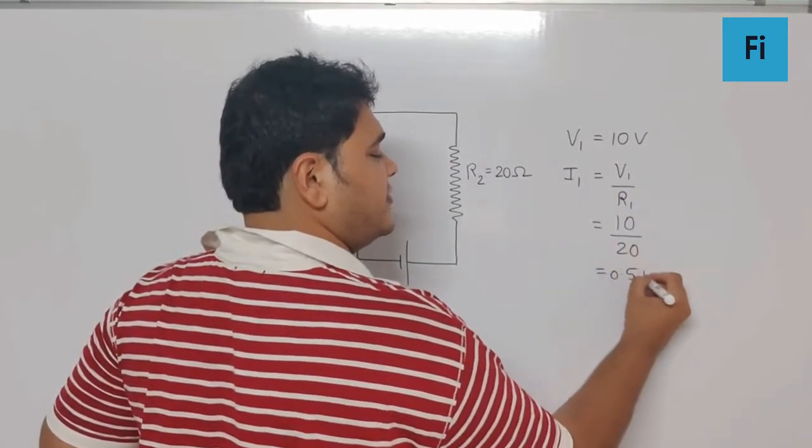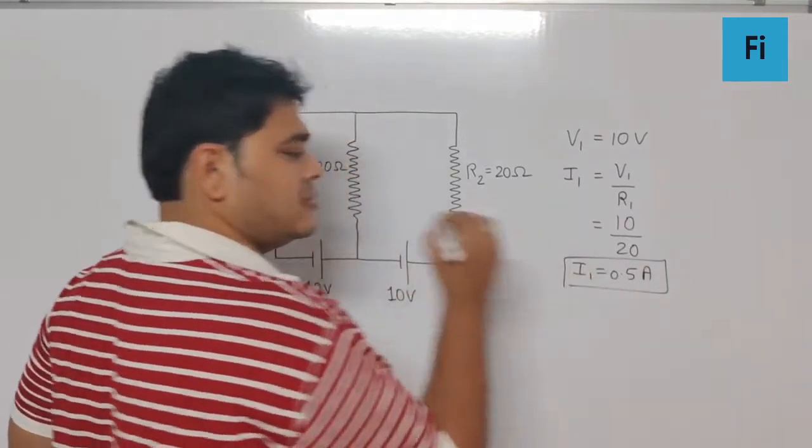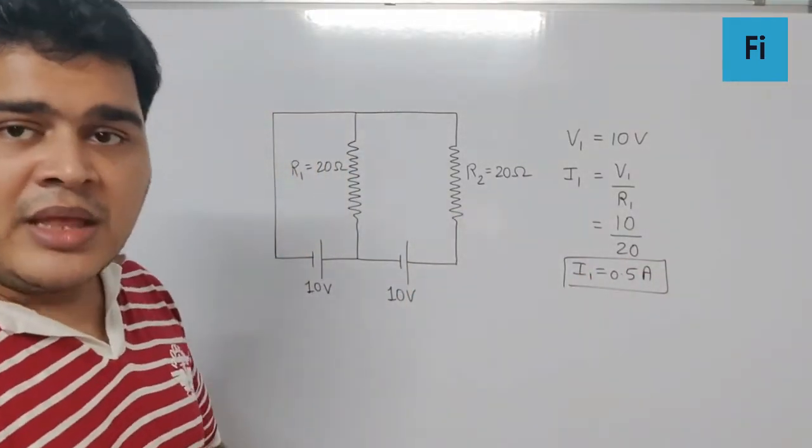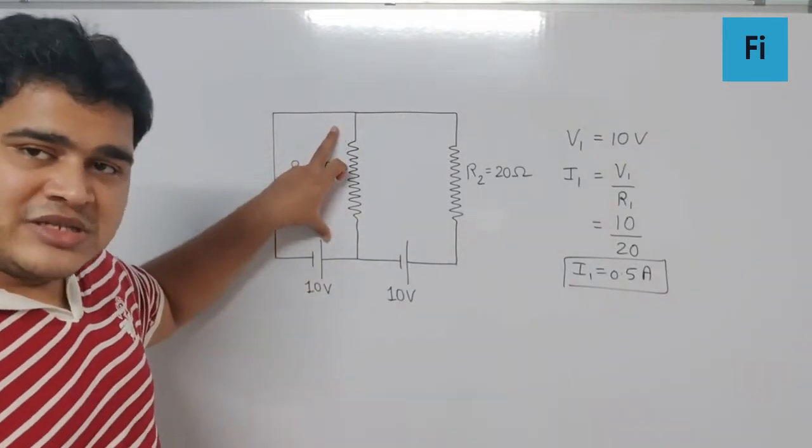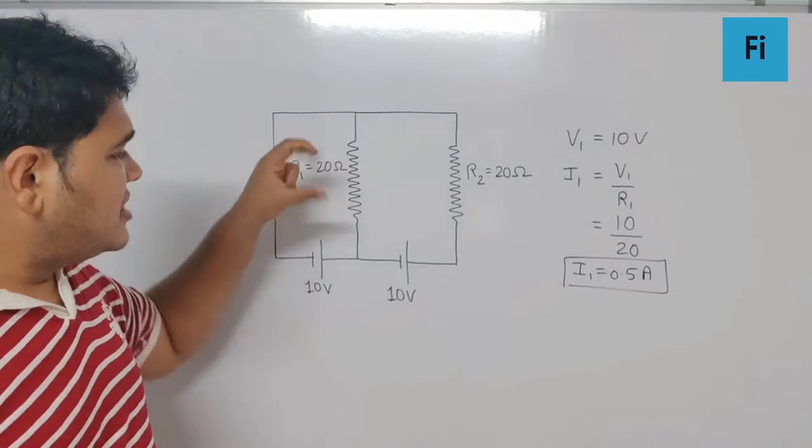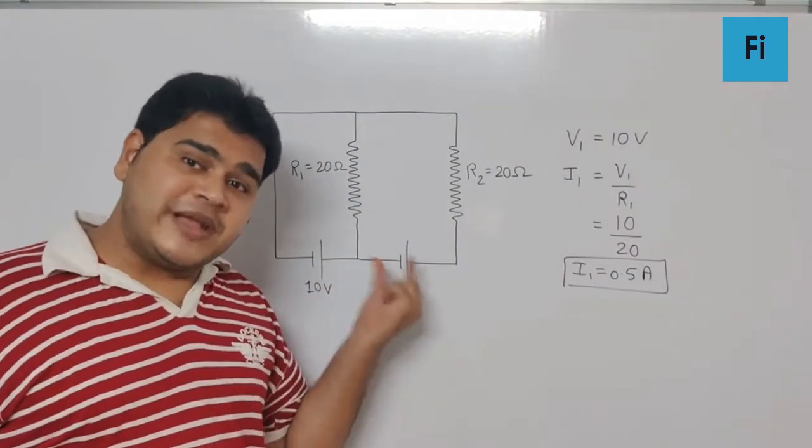Now for the second part, if I say the potential difference across this is 10 volt and the EMF connected in the second part of the circuit is also 10 volt, which are in the opposite direction, we can say they cancel each other.